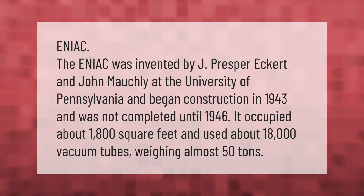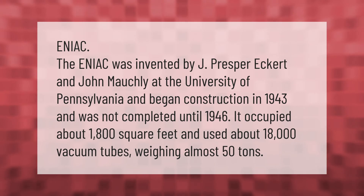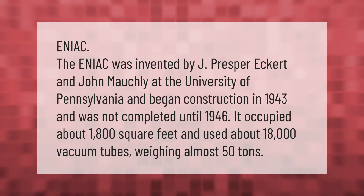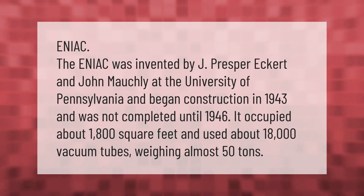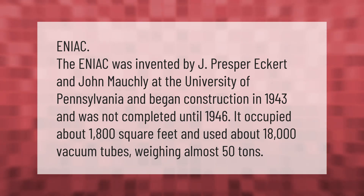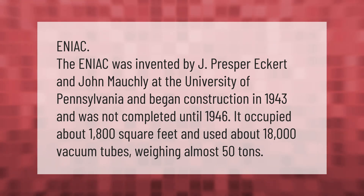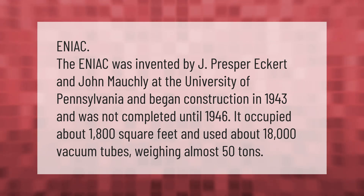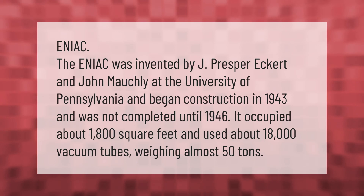The ENIAC was invented by J. Presper Eckert and John Mauchly at the University of Pennsylvania. Construction began in 1943 and was not completed until 1946. It occupied about 1,800 square feet, used about 18,000 vacuum tubes, and weighed almost 50 tons.